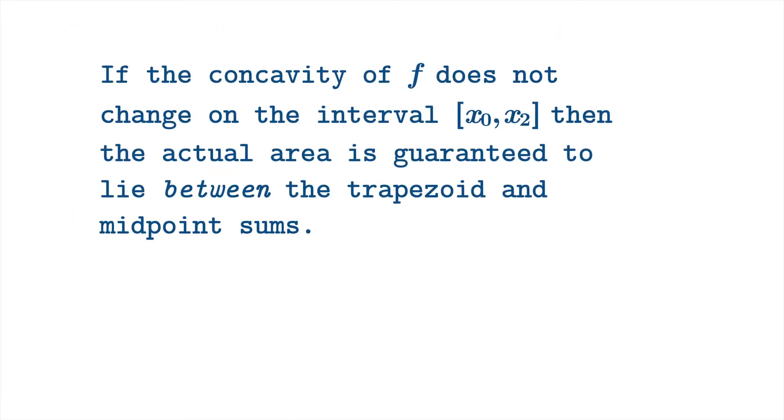If the concavity of f does not change on the interval, then the actual area is guaranteed to lie between the trapezoid and midpoint sums. Now if you have a general function that isn't wiggling around too violently, then a modest number of divisions of the interval in which you care about this function will probably give you a situation like this. If the concavity doesn't change that often, it doesn't take too many divisions to get this kind of behavior.